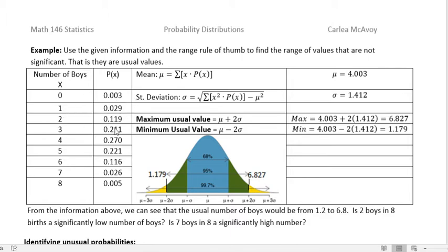The mean is 4.003 for this probability distribution about the number of boys and the probability of getting zero boys, one boy, two boys, and so forth, in eight births. The standard deviation is 1.412. The maximum usual value is μ + 2σ = 4.003 + 2(1.412) = 6.827. The minimum usual value is μ - 2σ = 4.003 - 2(1.412) = 1.179.